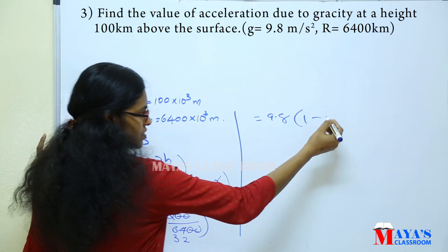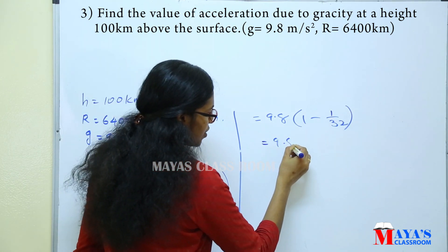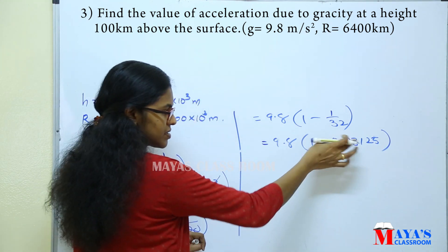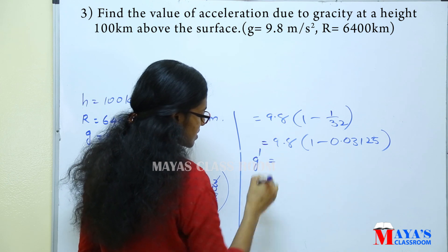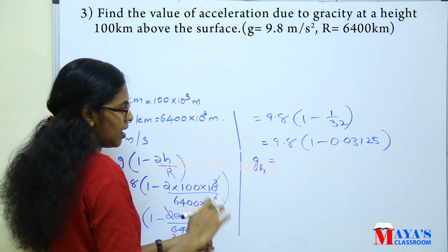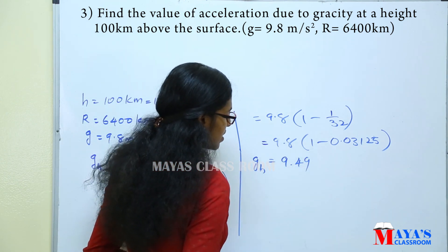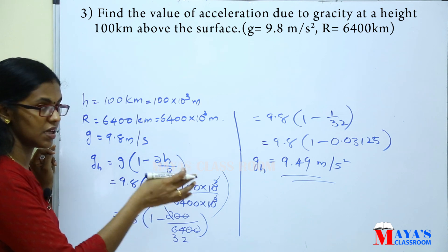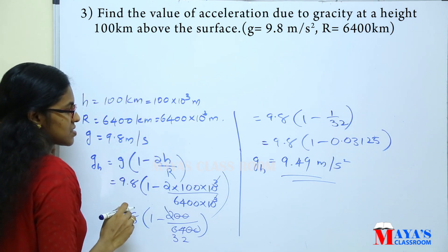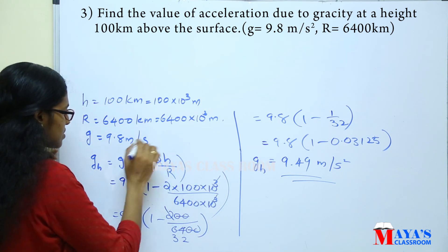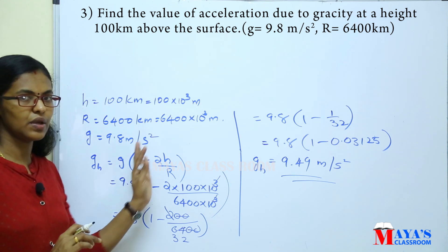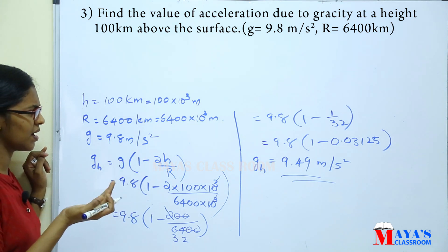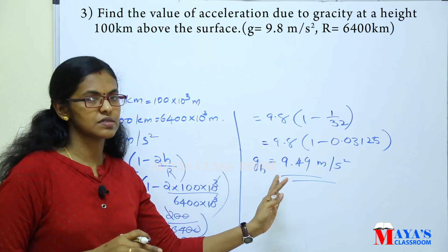Therefore, g' equals 9.8 into (1 minus 1/32). Multiplying through, the acceleration due to gravity at 100 km above the surface is 9.49 metres per second squared.